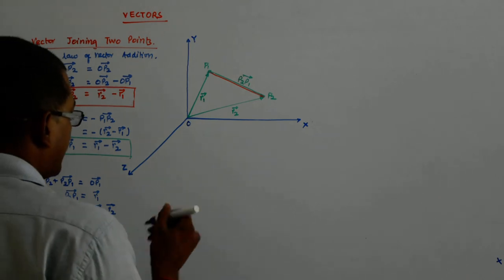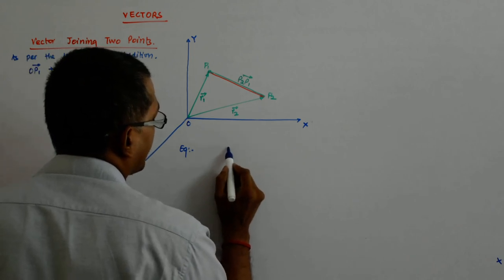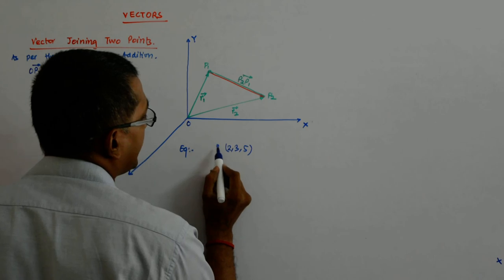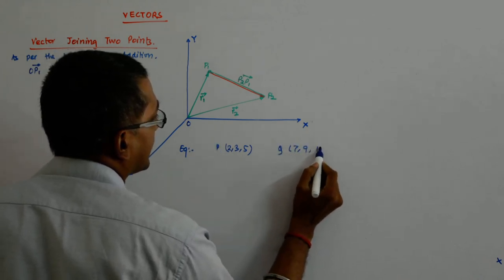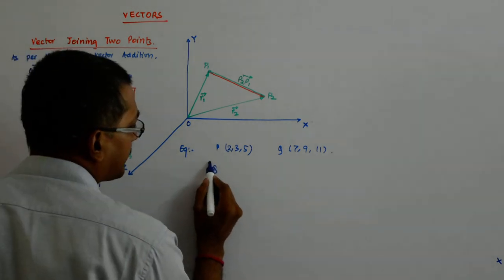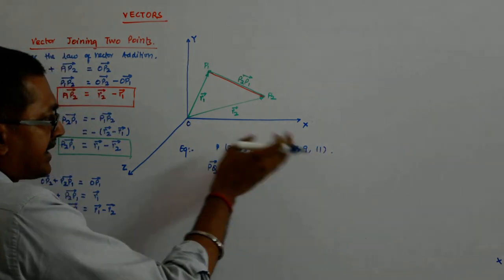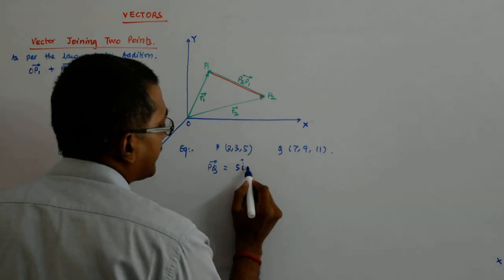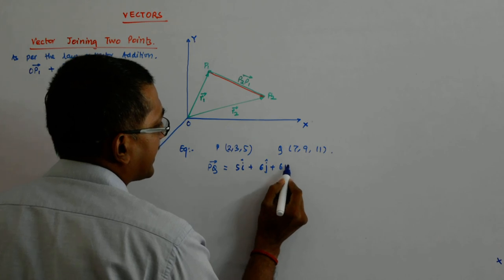So if someone gives me, for example, if someone gives me, say 2, 3, 5 is one point and 7, 9, 11 as the second point and I want a vector PQ, then what do I do? My head lies here. So I start subtracting this from there. So I get 7 minus 2, 5i cap plus 6j cap plus 6k cap.